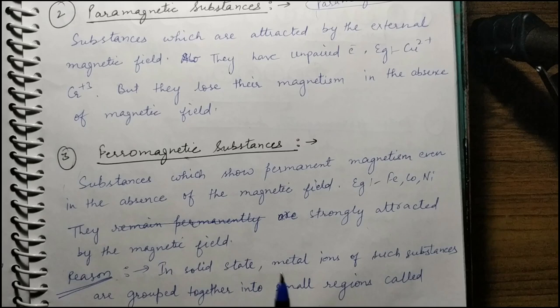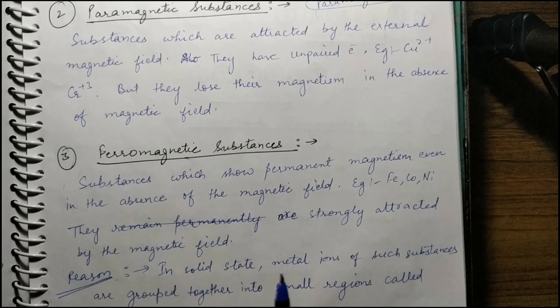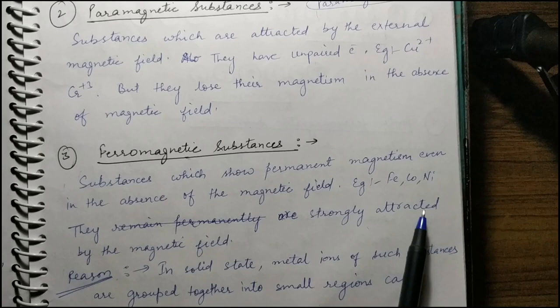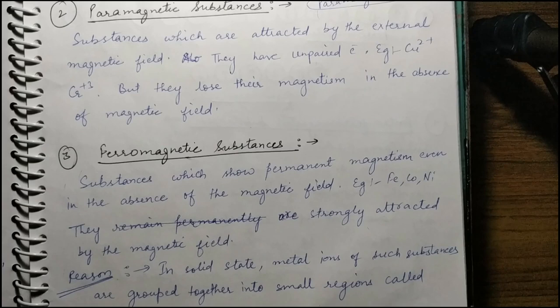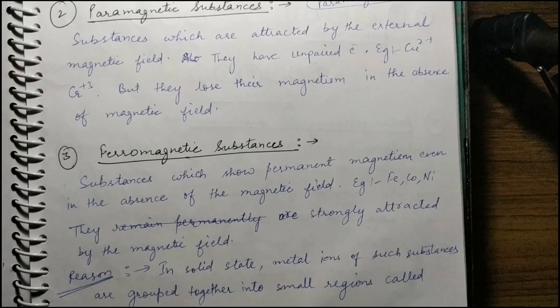Third type is ferromagnetic — these substances show permanent magnetism. Even after removing the magnetic field, once magnetized they remain magnetized. They are strongly attracted by the magnetic field. The reason is that in the solid state, small groups called domains form, and when a magnetic field is applied their alignment becomes proper, giving a strong resultant magnetic moment — hence permanent magnetism. In ferromagnetic, all domain arrows point in the same direction. A fourth type is antiferromagnetic — equal numbers of upward and downward arrows cancel out, giving a net magnetic moment of zero.